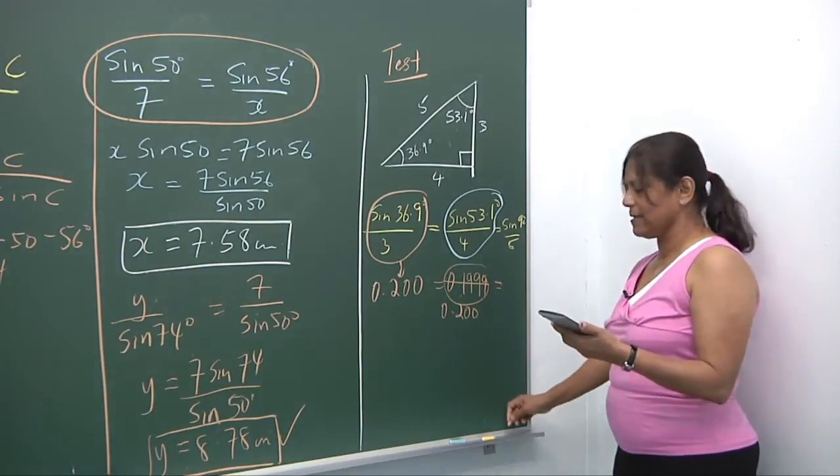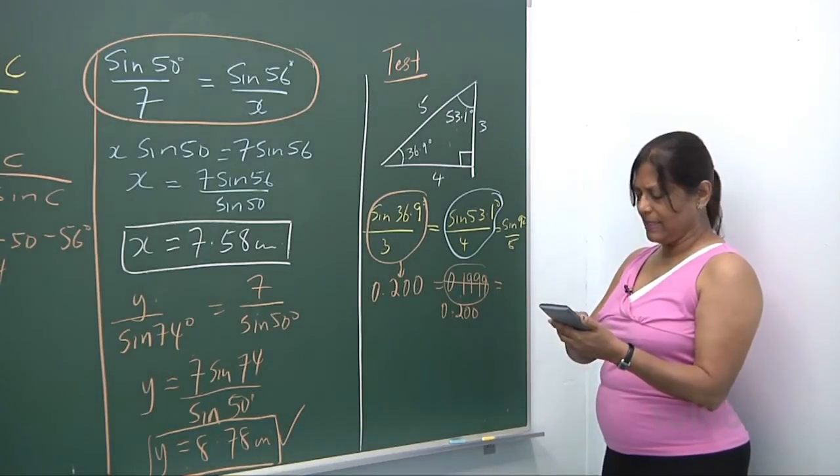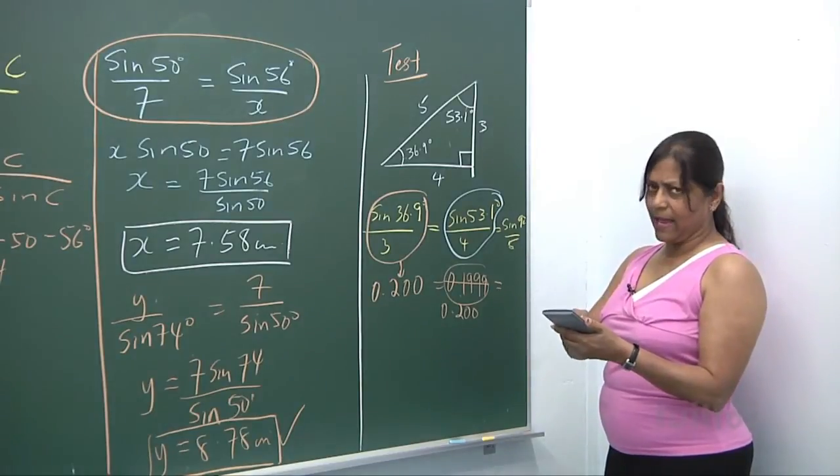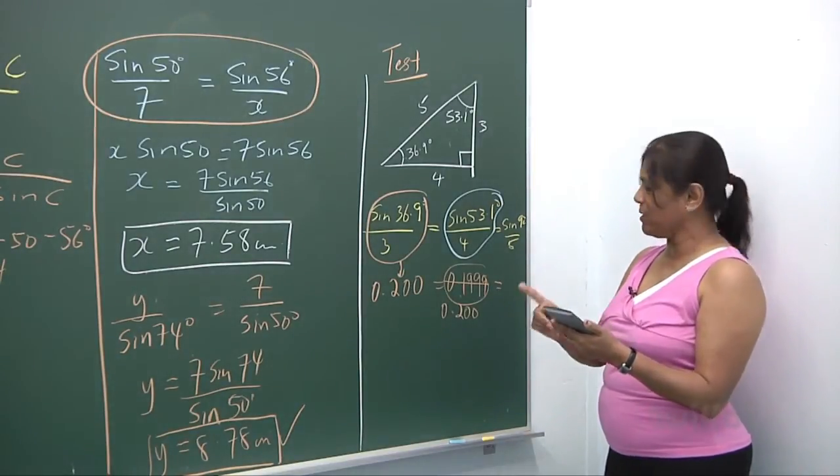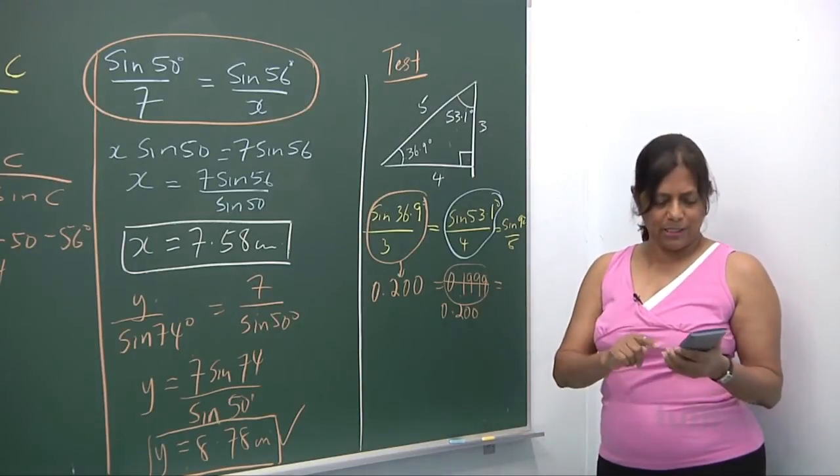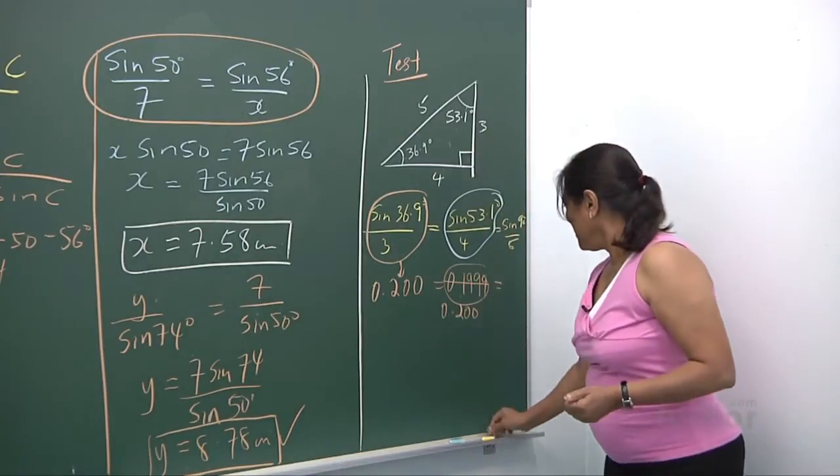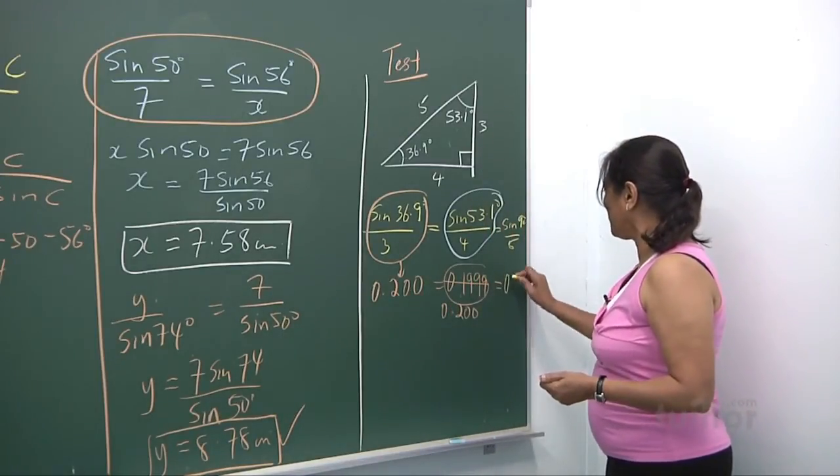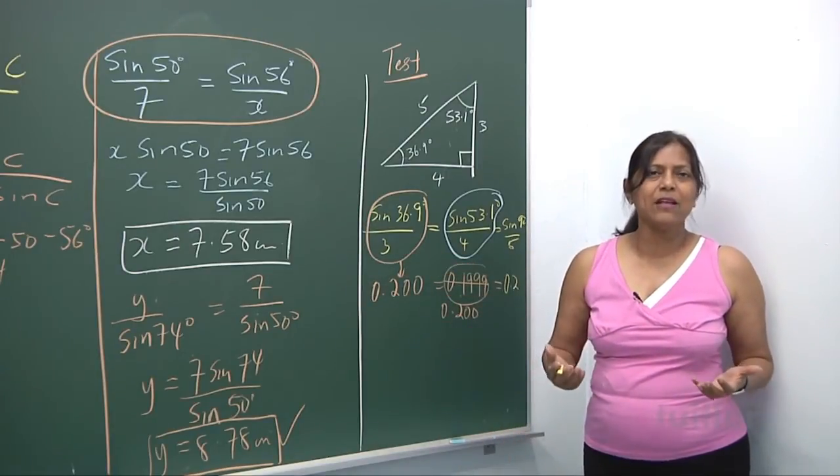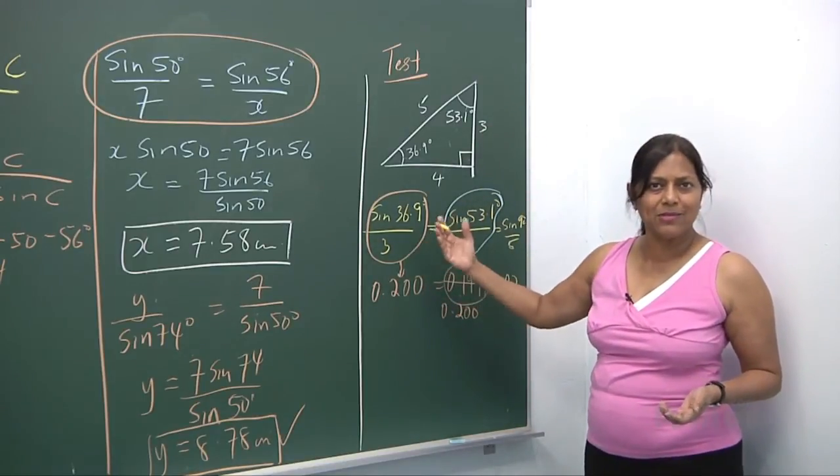Now look at sin 90 divided by 5. You know sin 90 is actually 1, but I want to make sure you know it. Divide by 5, you get 0.2. So you see, 0.200 - they are all there. You can be very convinced from this example. Sine rule is there to stay.